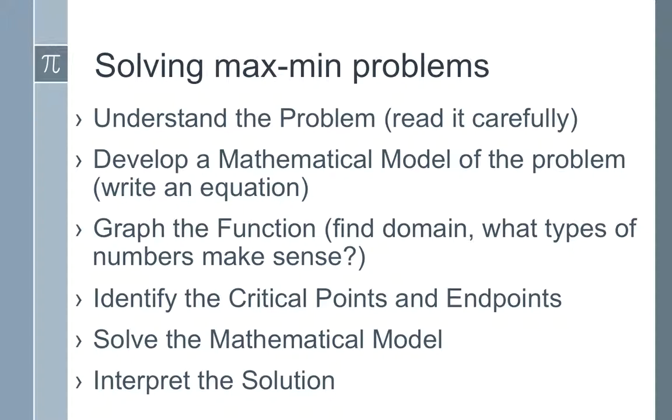Usually you're going to graph the function at some point in time so you might need a graphing calculator. We need to find the domain because when we're looking for minimums and maximums we have to test endpoints. We're going to be looking for critical points and endpoints. Critical points come from derivatives so that's where the calculus comes into play. You're going to use the calculus to solve that model and you're going to interpret the solution. What does that x equals 7 actually mean? Well it probably means the length of 7 maximizes the volume or something like that.